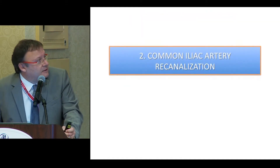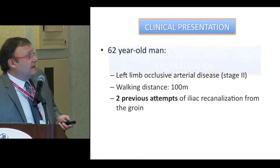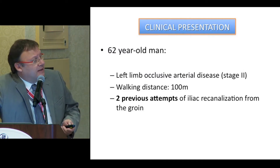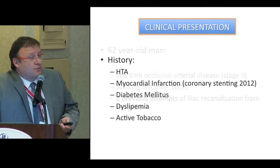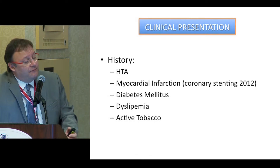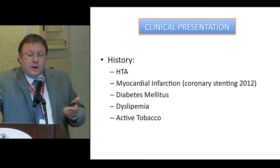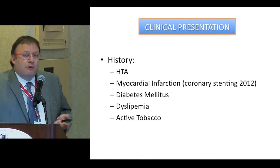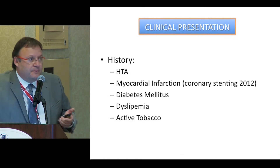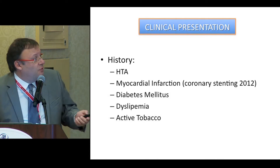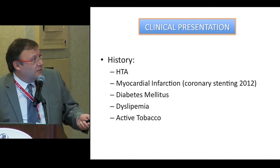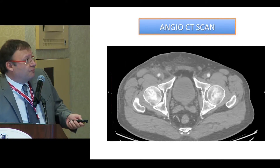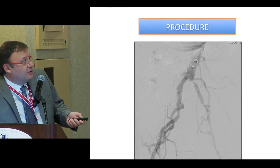The second case was interesting because it was a 62-year-old man in whom we had failed two previous attempts to recanalize a very short and heavily calcified common iliac lesion. We failed from the groin on the first attempt, and again from the groin on the second — we remained subintimal and never reentered the aorta. We then attempted from the brachial axis but never had enough support to pass the occlusion. It is a very short lesion, as you can see on the pre-procedure angiogram.